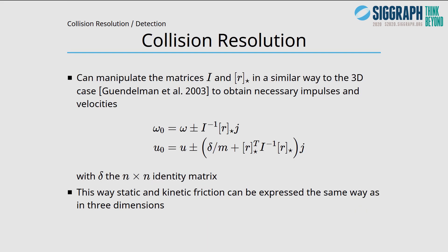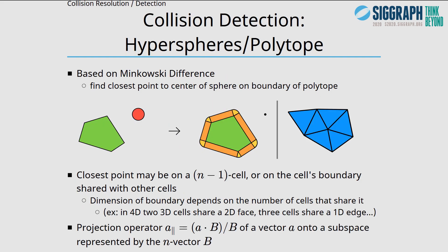For collision resolution, we can manipulate the matrices I and R star in a similar way to the 3D case to obtain the necessary impulses and velocities. This way static and kinetic friction can be expressed the same way as in three dimensions. The method I am using for hypersphere polytope collision is based on the Minkowski difference. It turns the problem into finding the closest point to the center of the sphere on the boundary of the polytope. The closest point might be on an n-1 cell or on that cell's boundary that is shared with other cells.